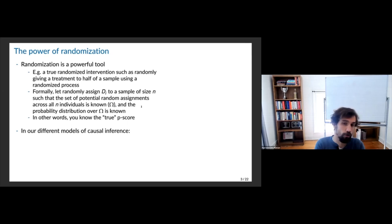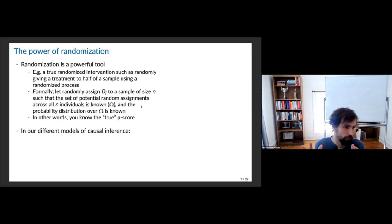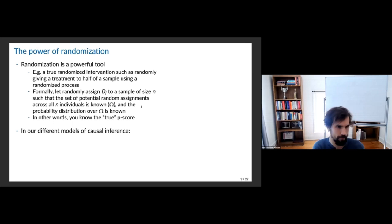Formally, treatment D_i is assigned to a sample of n such that the set of potential random assignments across all individuals is known. There's some omega space — the probability distribution of our treatment — where we think about probability assignments across individuals and effectively know how people will be treated. In the simplest version, if I flip a coin for everyone, I know your propensity score: it's 50-50, uncorrelated with everything else.